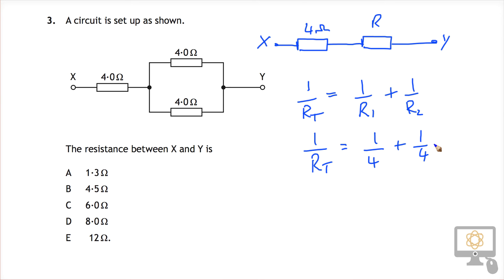1 over 4 plus 1 over 4 is equal to 2 over 4, which is equivalent to 1 over 2.